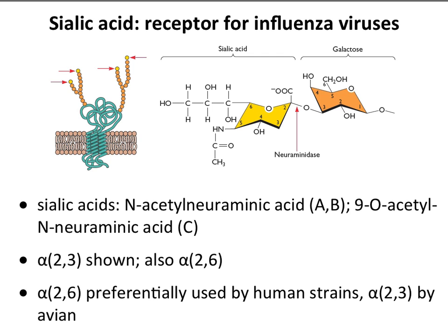Our respiratory tracts have largely alpha-2-6 sialic acids in the upper and lower tract, and human influenza viruses prefer that. We have alpha-2-3 in our lower tract but not much in our upper tract. Avian influenza virus strains prefer alpha-2-3 linked sialic acids. This is one reason why it's not so easy to be infected with avian influenza strains — the receptors are way down in your lungs, and you have to inhale a large aerosol pretty deeply. But it does happen, and occasionally people die of H5N1, an avian strain that binds alpha-2-3.